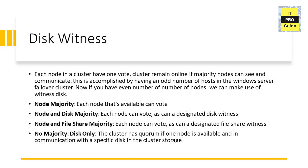The final option is no majority — disk only. This is not recommended because if something happens to the disk while the Hyper-V hosts are still running, it won't help. If only the disk is considered in the quorum, any failure to the disk witness stops the entire cluster. You can choose node majority for odd numbers of servers, node and disk majority for even numbers, with choices of disk, file share, or cloud disk witness.